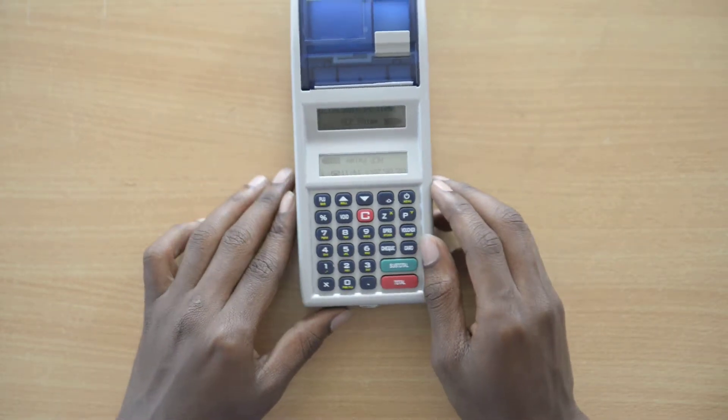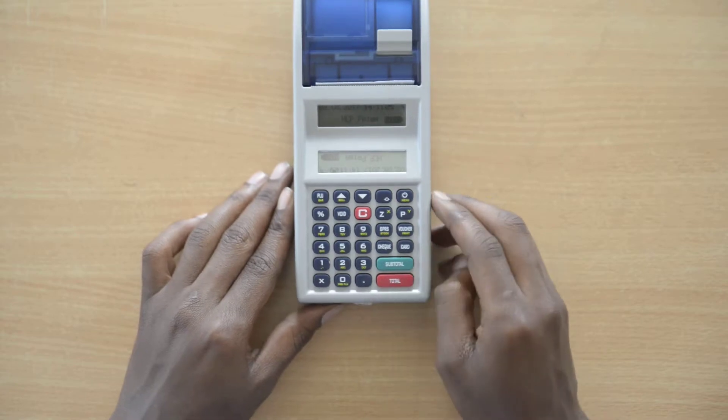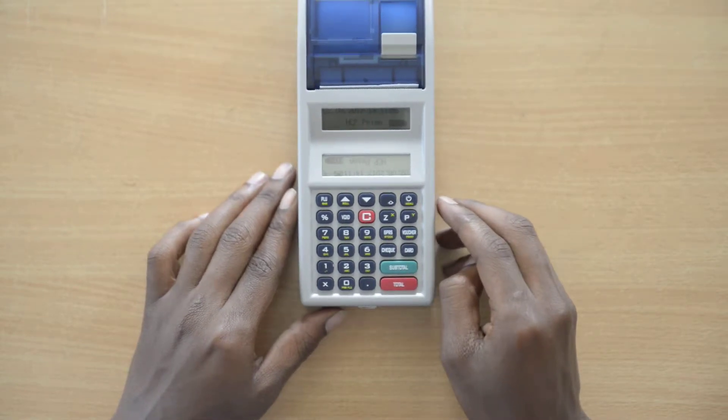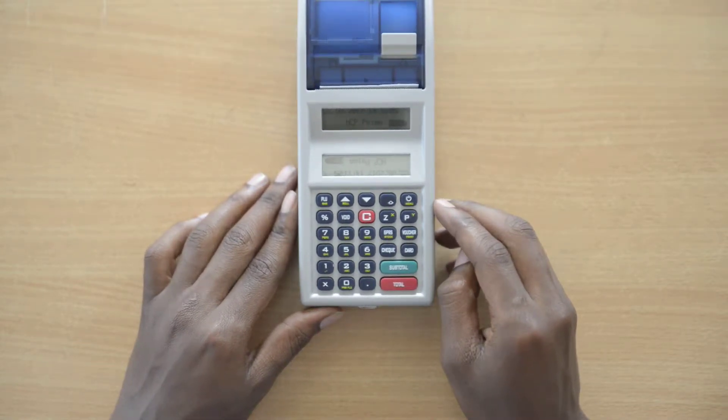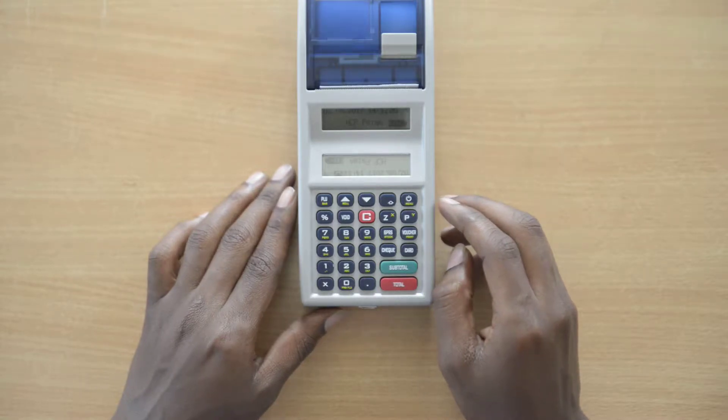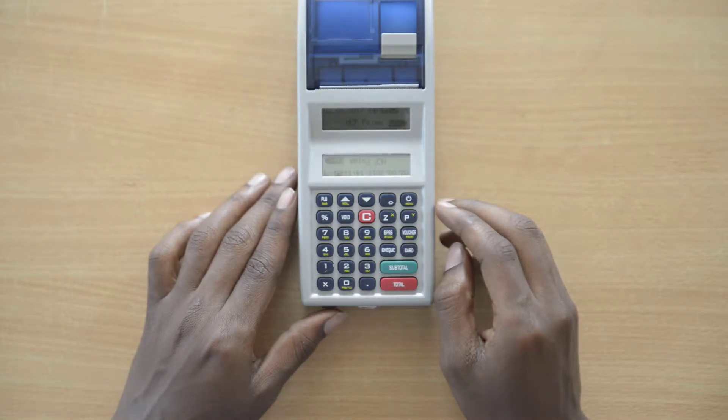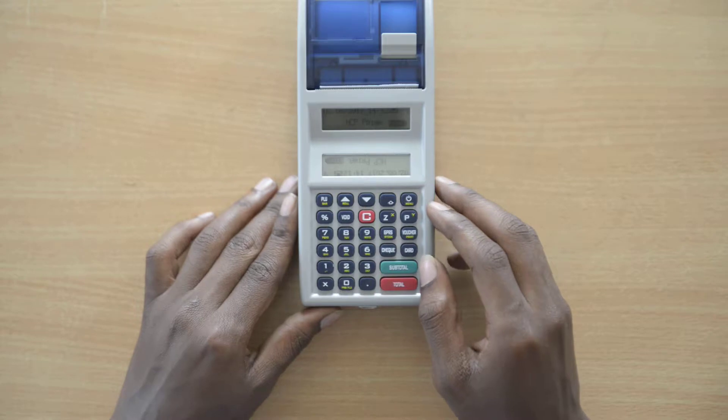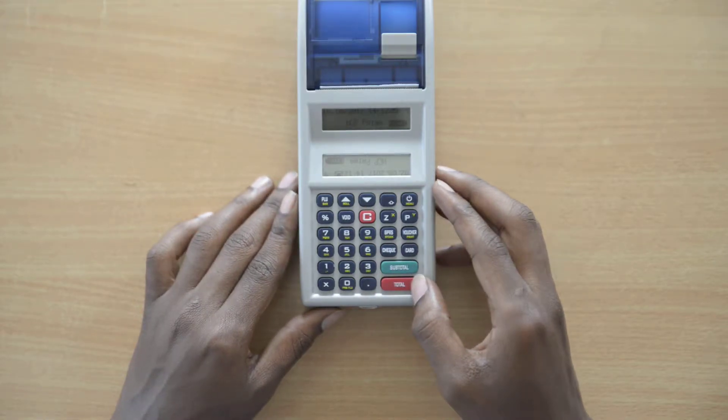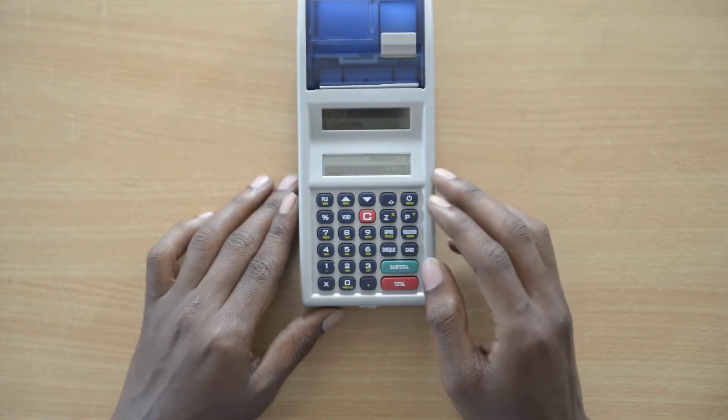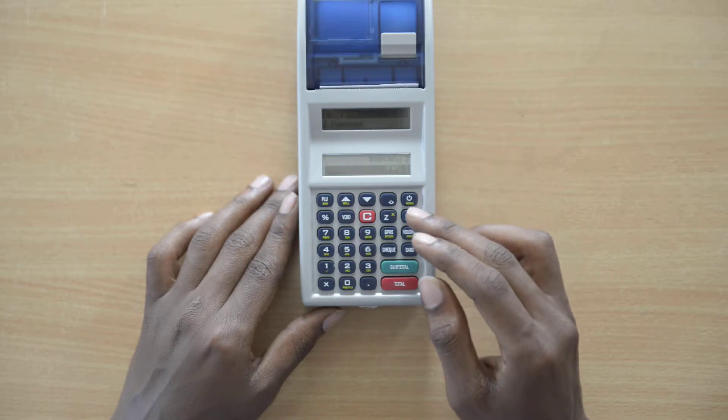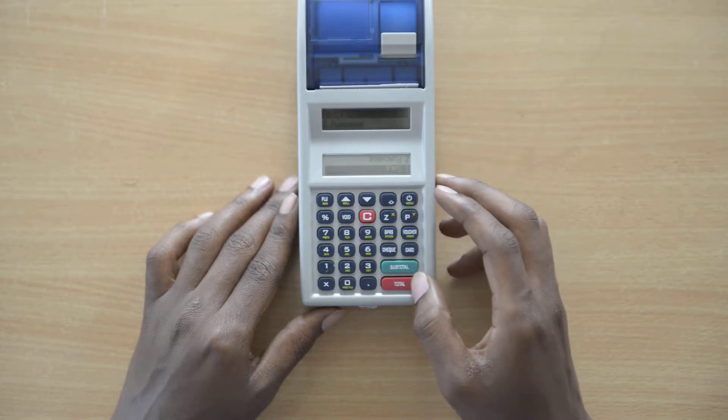Welcome again. I'll show you how to use the HTC Prima. First, I'll show you how to make sales. Once you switch it on, you press Toto. The dialect will come up with sales and purchases, and you will press Toto.